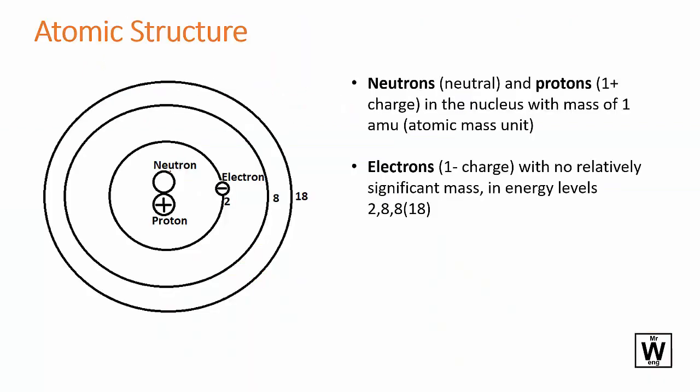The basic structure of the atom has neutrons and protons in the nucleus at the center and electrons on the outside. The neutrons are neutral, the protons are positive, and the electrons are negative.